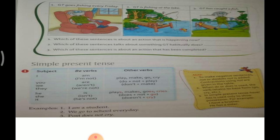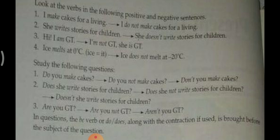Example: 'We go to school every day.' This is a routine — simple present. Now look at positive and negative sentences. Positive (hakaratmak): 'I make cakes for a living' — main cake banati hoon mere jeene ke liye. Negative (nakaratmak): 'I do not make cakes for a living.' We can use the short form 'don't' instead of 'do not'.